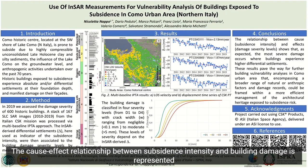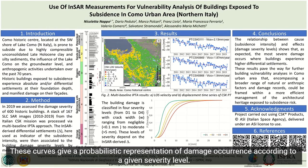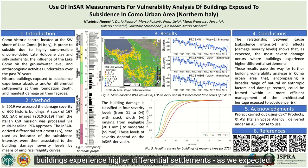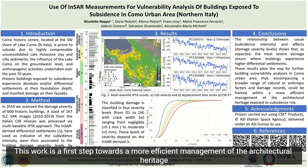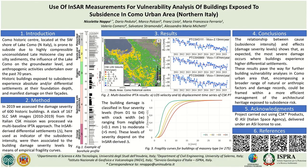The cause-effect relationship between subsidence intensity and building damage is represented by empirical fragility curves in Figure 3. These curves give a probabilistic representation of damage occurrence according to a given severity level. In conclusion, these results show that the most severe damage occurs where buildings experience higher differential settlements, as expected. This work is a first step towards a more efficient management of the architectural heritage of Como historic center exposed to subsidence. Thanks for watching!